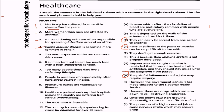Fourth: cardiovascular disease is becoming more common in Britain. Fourth will match with A — illnesses which affect the circulation of blood are particularly common with people who are overweight. That covers cardiovascular disease.